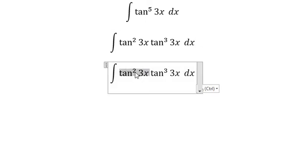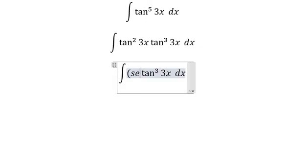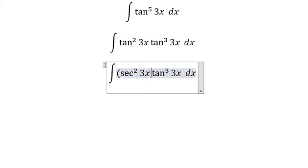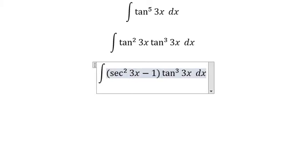tan²(3x) we can put as sec²(3x) - 1, and now this one multiply this one and this one multiply with this one.